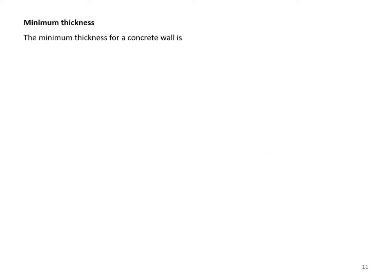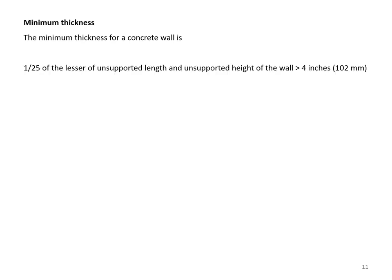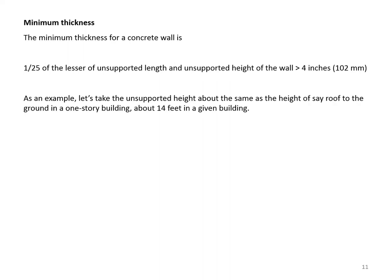Minimum thickness: the minimum thickness for a concrete wall is 1/25th of the lesser of the unsupported length and unsupported height of the wall; however, it cannot be less than 4 inches.